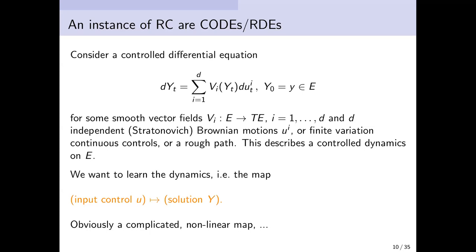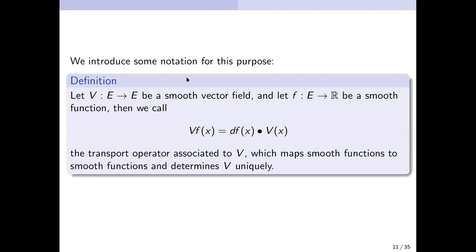One must therefore understand the precise structure of the map in order to construct regression features that are themselves of high regularity. To set notation: imagine E has a linear structure so that the tangent bundle equals the space itself. We have a smooth vector field and a test function, and we consider vector fields as first-order differential operators — applied to a test function by taking the directional derivative at a point in the direction of the vector field.